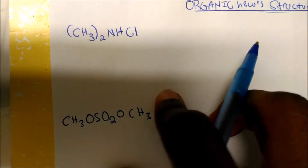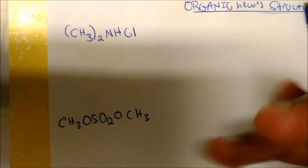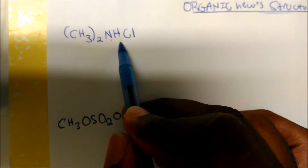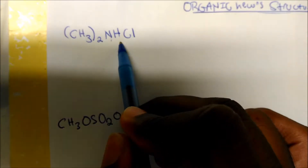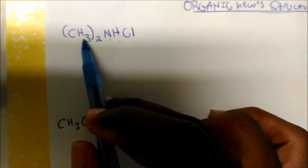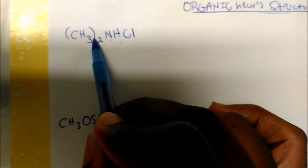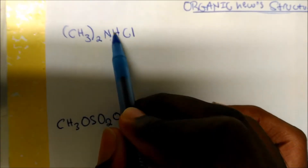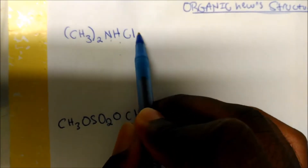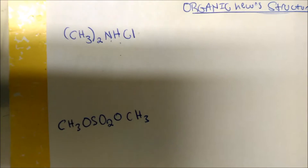Looking at this first one, I can see that I have two methyl groups bonded to a nitrogen, a hydrogen, and a chlorine. One thing with Lewis structures: you want to read from left to right. Just like how I read it, saying to myself: I have two methyl groups bonded to a nitrogen, a hydrogen, a chlorine. That makes the problem easier.